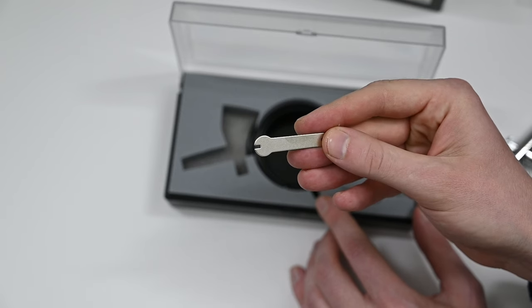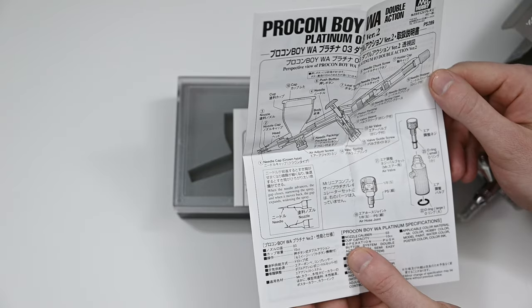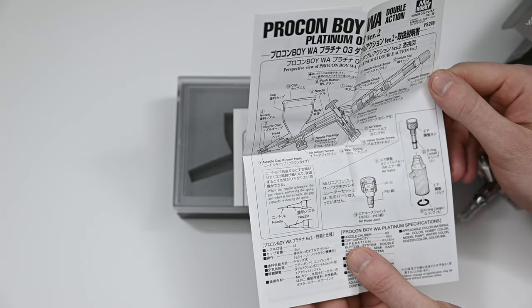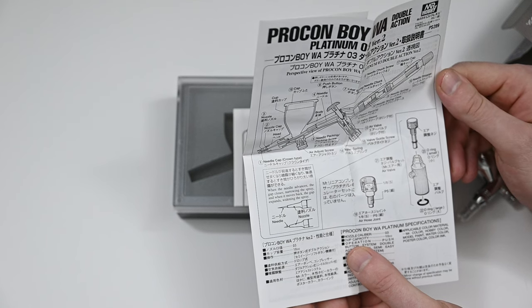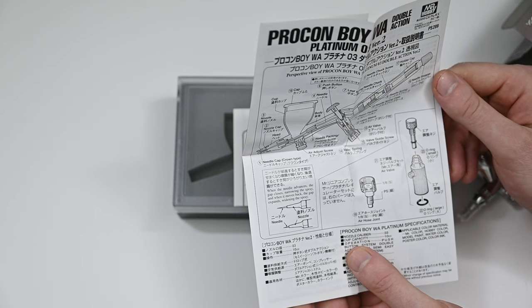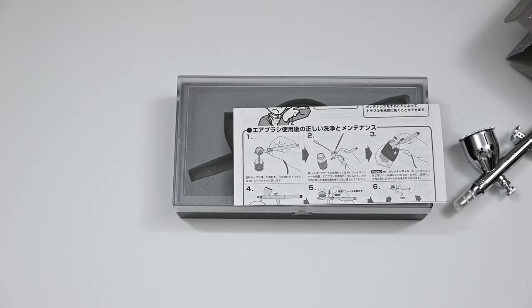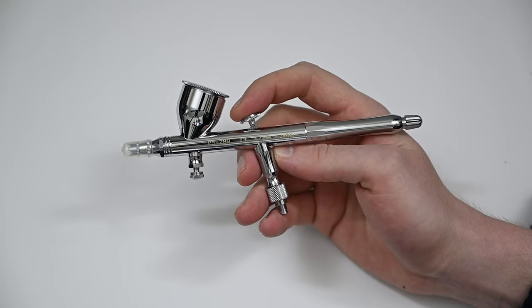In the box, you also get one of these cheap stamped metal wrenches to remove the nozzle, and some really nice documentation that goes into a lot of information about this airbrush. These documents are both in Japanese and English, and it's one of the most informative ones that I've seen from any brand.